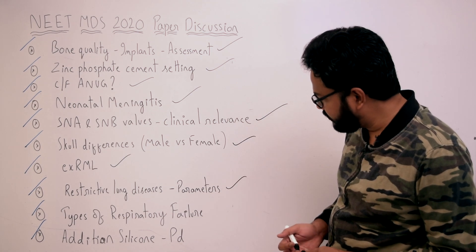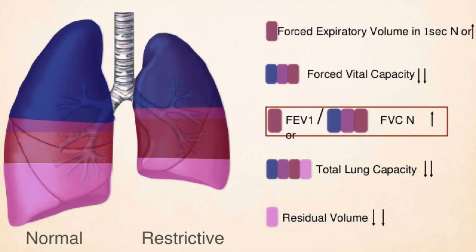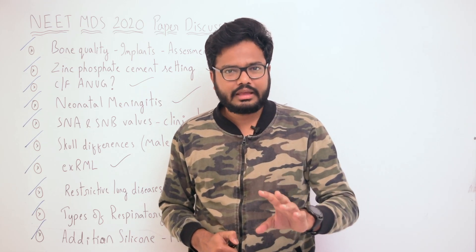Regarding restrictive lung diseases and altered parameters: forced expiratory volume (timed vital capacity) is slightly reduced in restrictive respiratory diseases such as fibrosis of lungs. Peak expiratory flow rate (PEFR) is used for differentiating obstructive from restrictive lung diseases; the reduction in PEFR is more significant in obstructive diseases than in restrictive diseases.